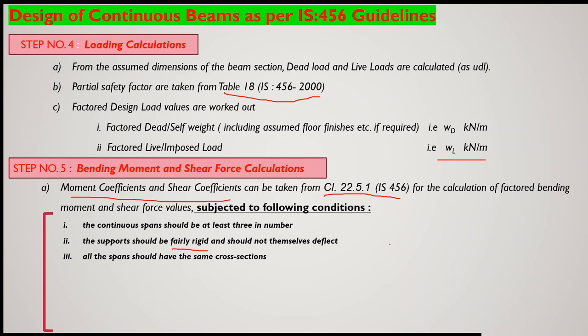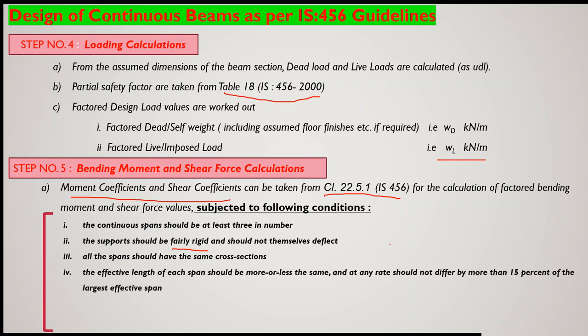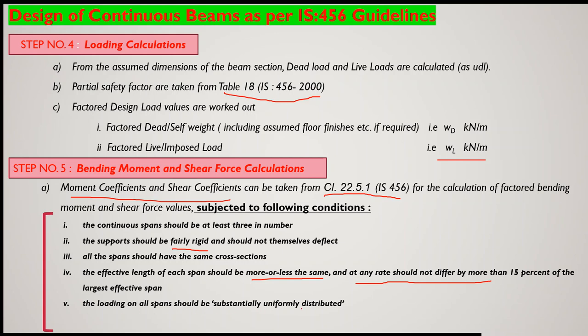The fourth condition is that the effective length of each span should be more or less the same. Because this is an approximate method, it is better to keep all spans of equal length. If span lengths differ, code states they should not differ by more than 15 percent of the largest span. The fifth condition is that the loading on all spans should be substantially uniformly distributed load — we convert all loads to UDL.